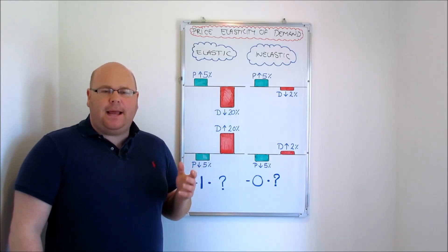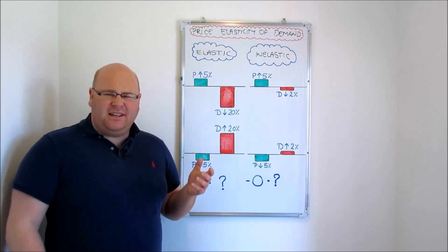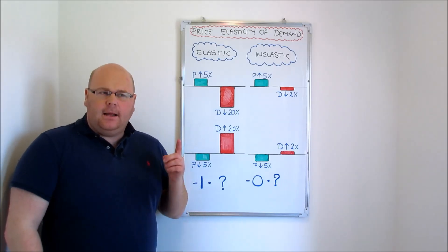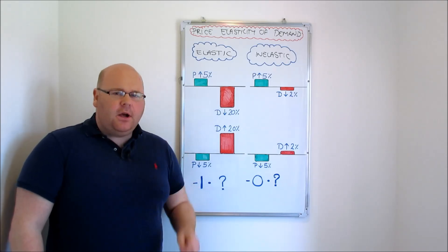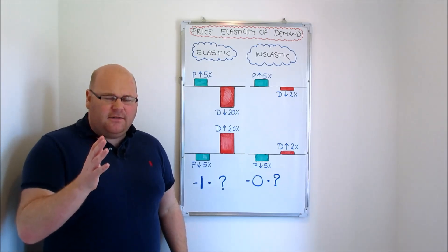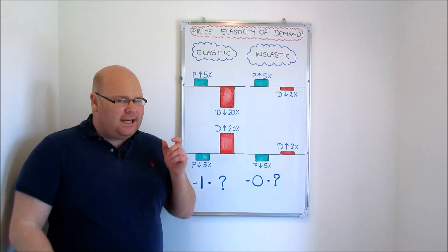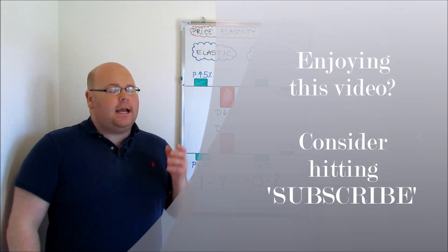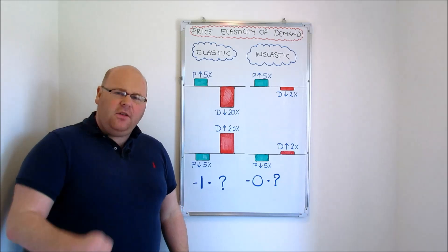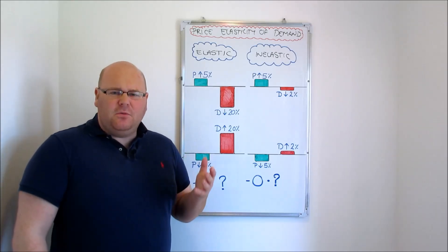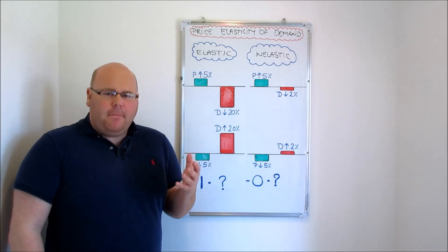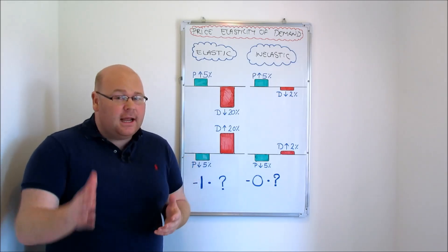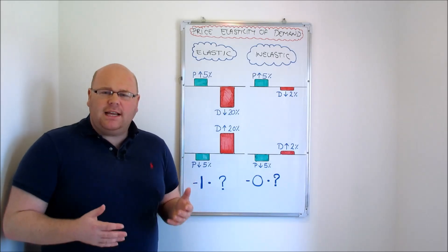If we increase the price of one of our products, it's only to be expected that we're going to lose some customers. Whenever you put the price up, you'll likely alienate some customers and price some out of the market. But how many? Sometimes when you increase the price of a product, demand is so price sensitive that if you put the price up even a little bit you will price out a large proportion of your customer base. But for other products, if you increase the price, you may lose a few customers but most will go with that price increase.